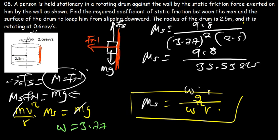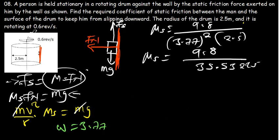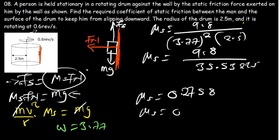So μs equals 9.8 divided by 35.5325. My coefficient of static friction is 9.8 divided by 35.53, which I can round off to get the final answer. That is the coefficient of static friction for this question.